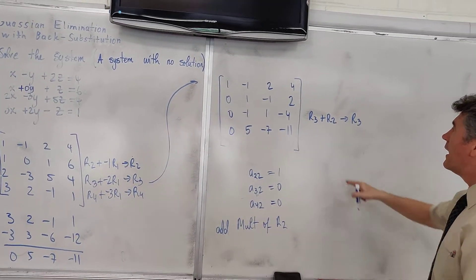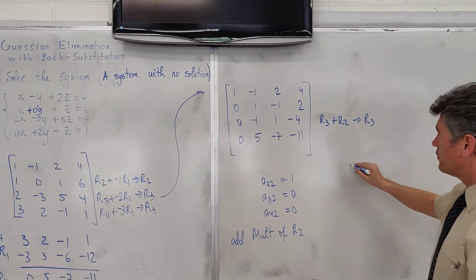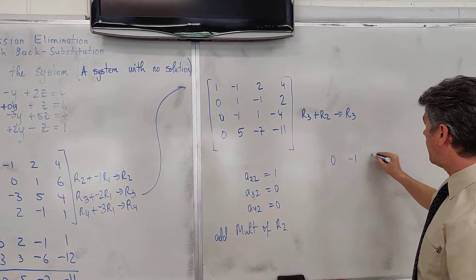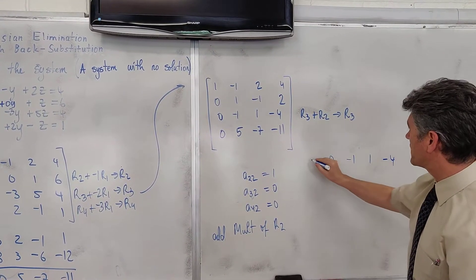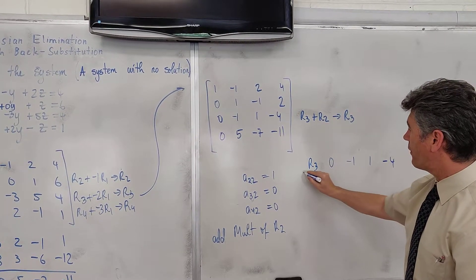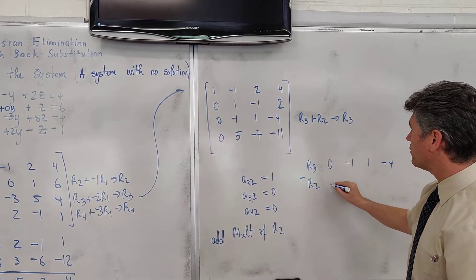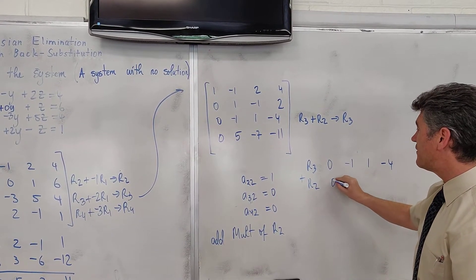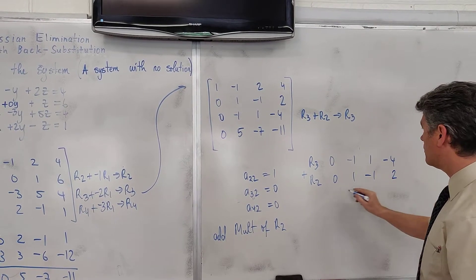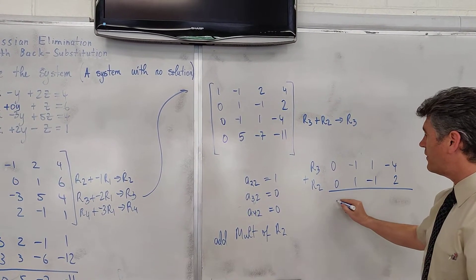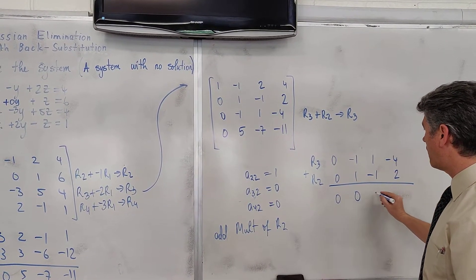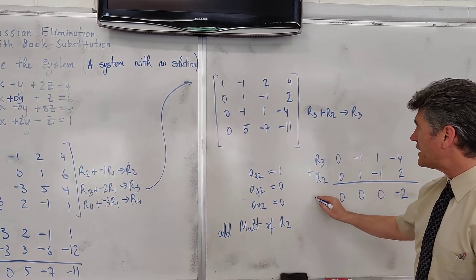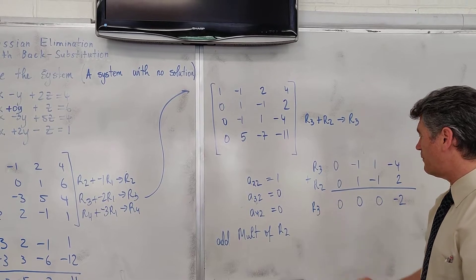You'll see why in a second. Row 3 plus row 2. We have 0, negative 1, 1 and negative 4. There is our row 3 plus row 2: 0, 1, negative 1 and 2. Let's add them together. We get 0, 0, 0 and negative 2. And right now, we run into a problem.